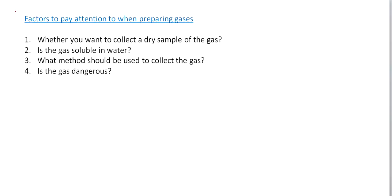There are several factors we need to consider when preparing gases. First, whether you want to collect a dry sample of the gas or not. Second, if the gas is soluble in water — for example, ammonia gas is very soluble in water. Third, what method we should use to collect the gas. Fourth, whether the gas is dangerous or not, because if we are preparing a dangerous gas, we need to do it in a fume cupboard.